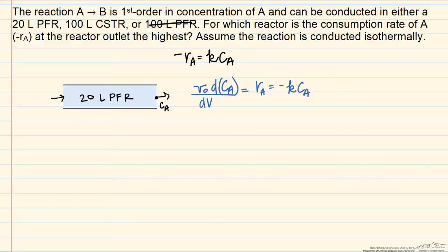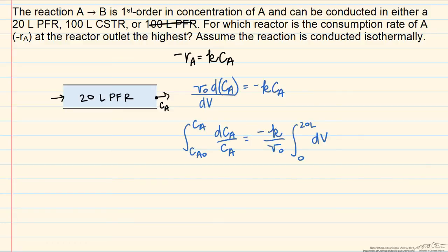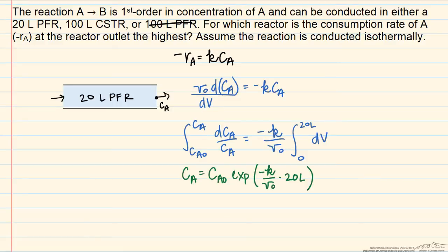Dividing both sides by C_A and multiplying by dV gives an integrable form. We integrate from the initial concentration C_A0 to the final outlet concentration C_A,exit — which is what we want to solve for — and on the right side we integrate negative K over V₀ with respect to dV. Since K and V₀ are constants, integrating the left side gives a classical logarithmic form, and applying the integration limits yields our result.